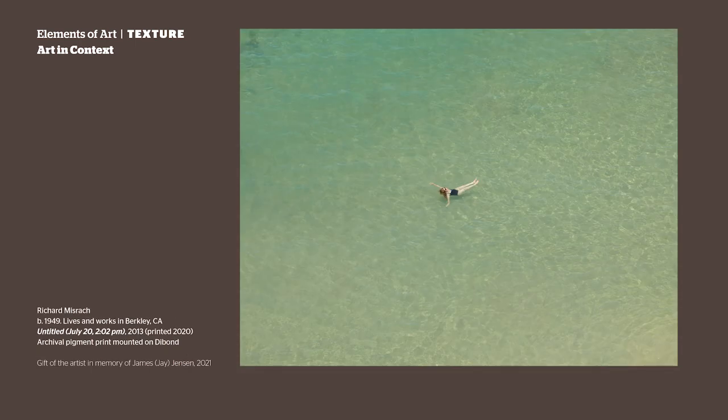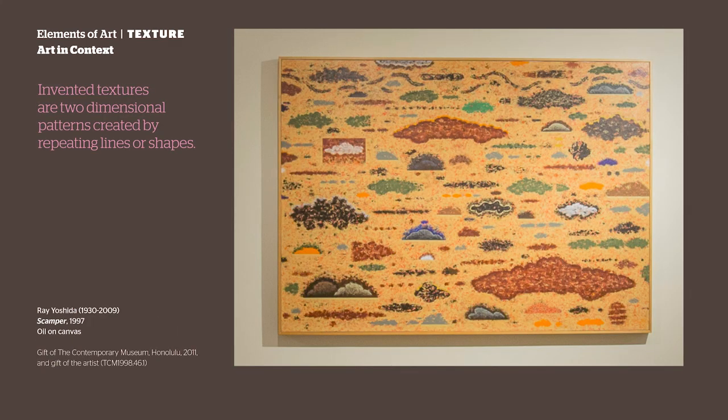Photographs have both real and implied texture. There are the real, everyday textures that the camera captures — when we look at a photo of someone, we can see the textures of their clothing and the space around them. However, photographers can also create implied texture through lighting and angles. These textures don't have to mimic or copy real textures; they can be new, invented textures. Invented textures are two-dimensional patterns created by repeating lines or shapes, and these patterns can have their own unique textures not found in nature.